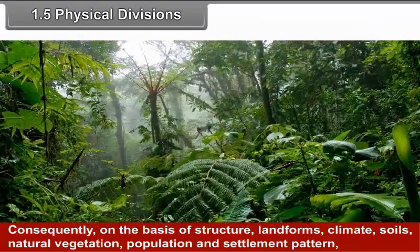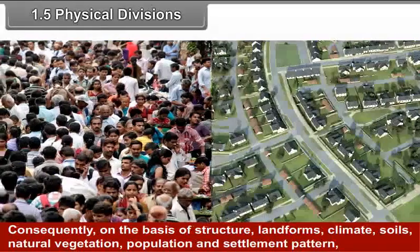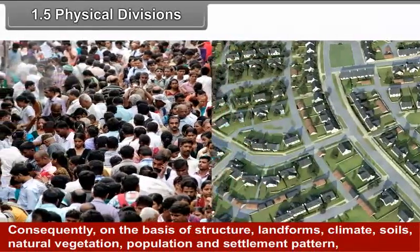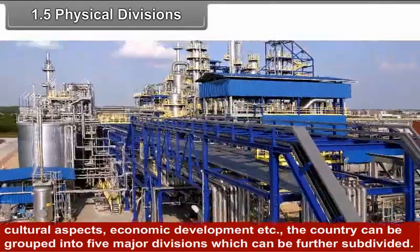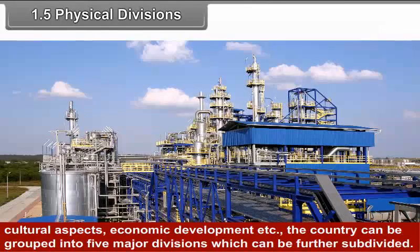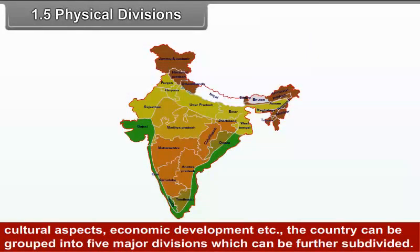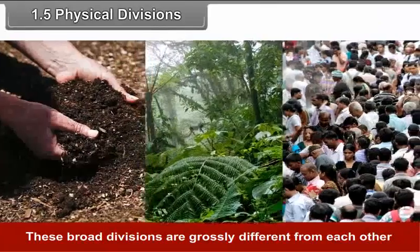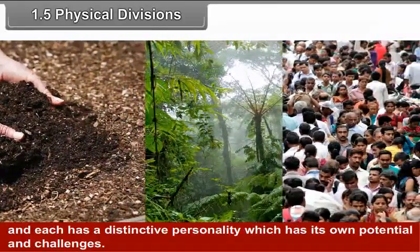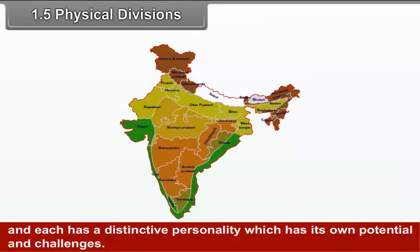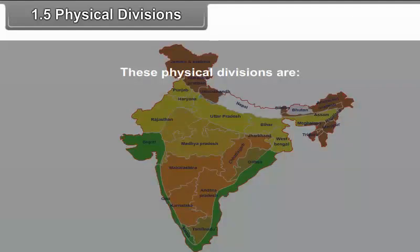However, there is some similarity in this diversity. Consequently, on the basis of structure, landforms, climate, soils, natural vegetation, population and settlement pattern, cultural aspects, economic development, etc., the country can be grouped into five major divisions, which can be further subdivided.